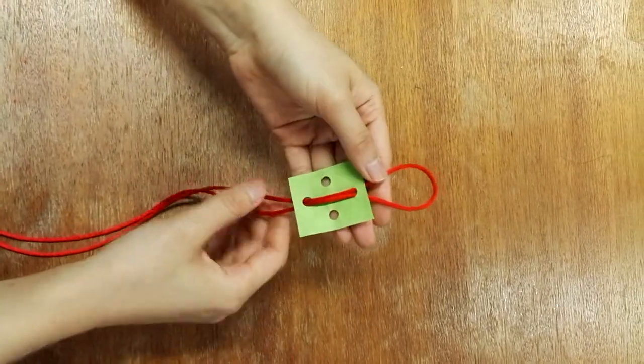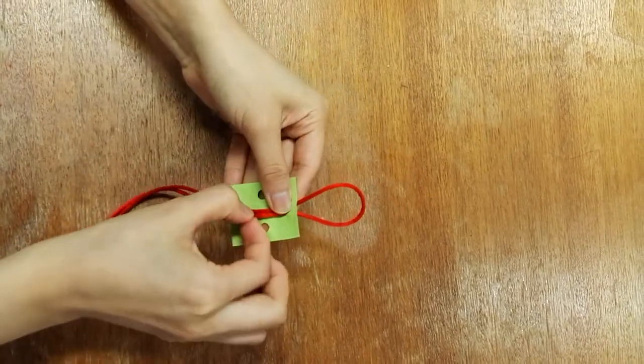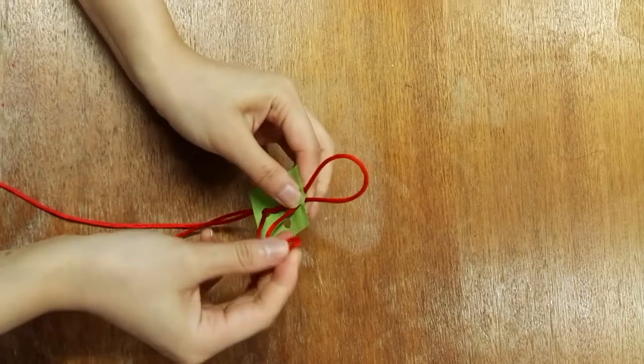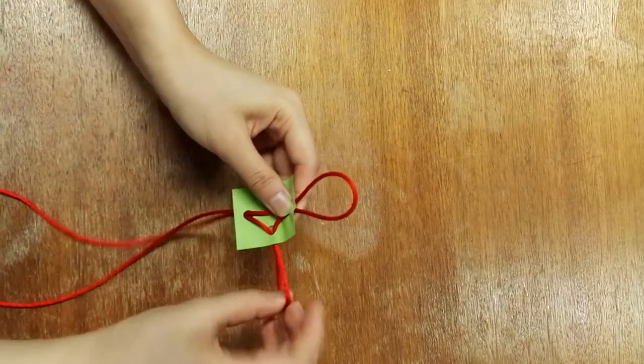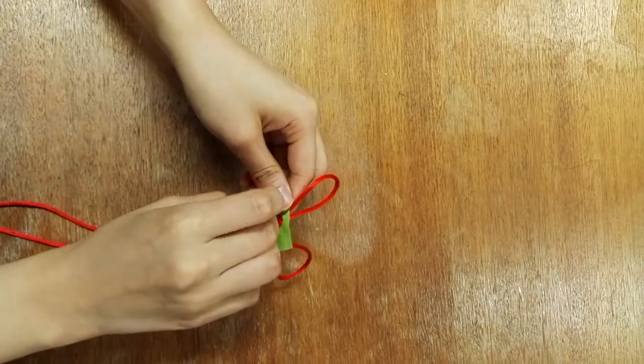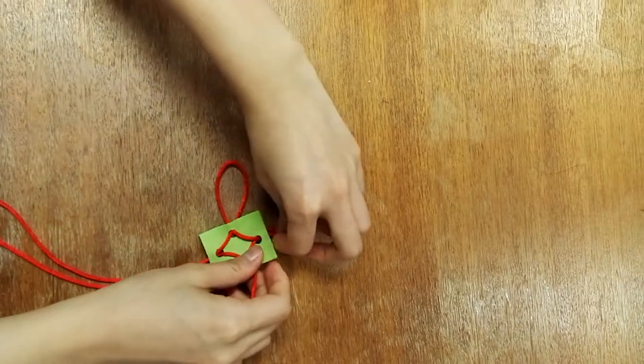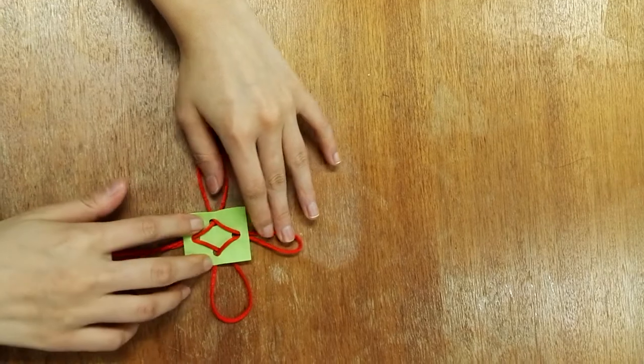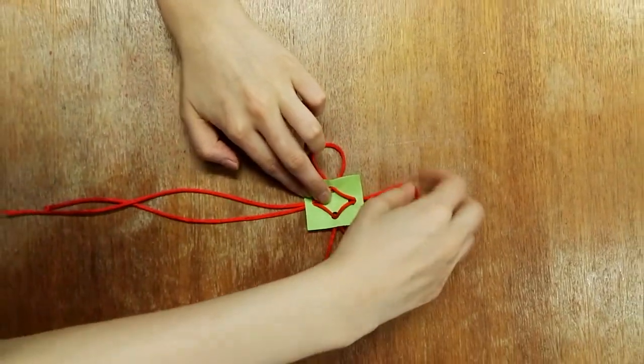Make the two side bights by inserting the cord into the left and right holes. Make sure the three bights are the same size.